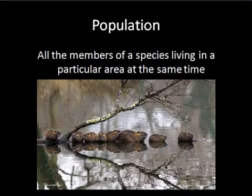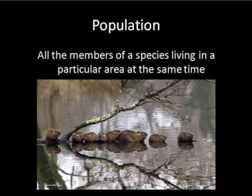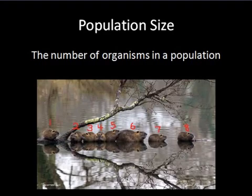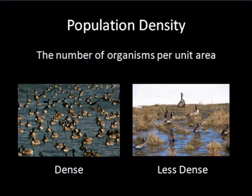Just to refresh: population is all the members of a species living in the same area at the same time. Population size is the number of organisms in a population — so here we have a population size of 8. Population density is the number of organisms per unit area, so when you look at the same size area, you see if there are more or less of a population in that area.